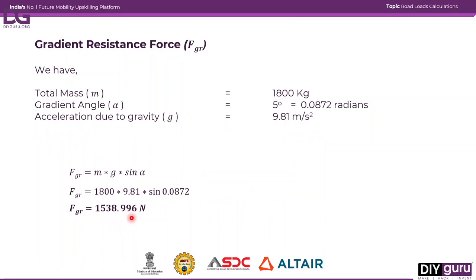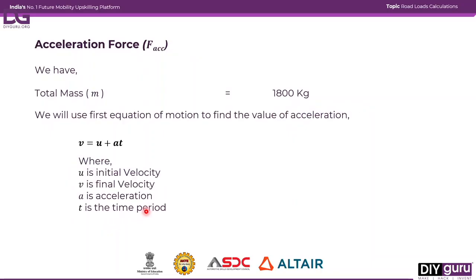The next force is gradient resistance. Mass is 1800 kg, gradient angle is 5° (0.0872 radians), and acceleration due to gravity is 9.81 m/s². Putting these values into the gradient resistance equation, we get the gradient resistance force to be 1538.996 N.